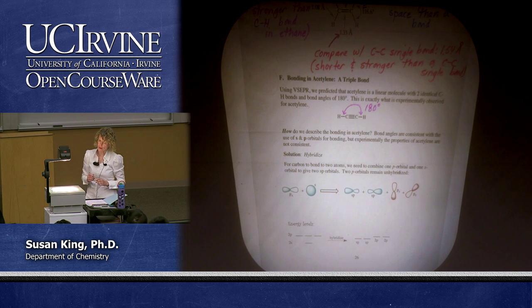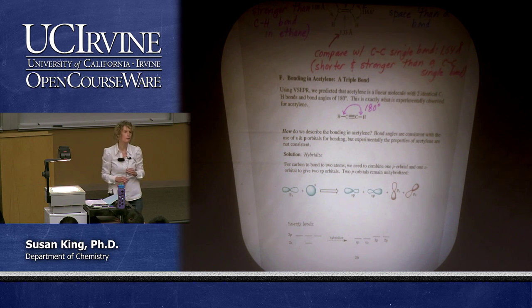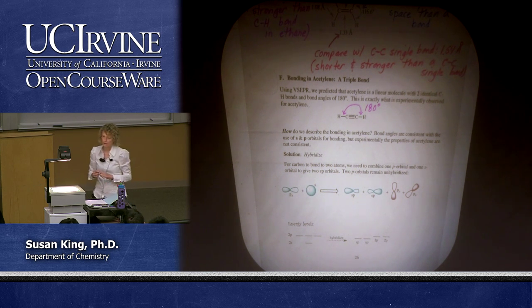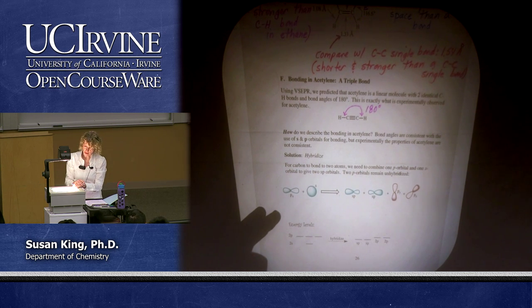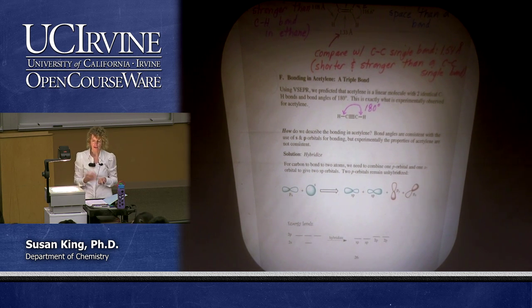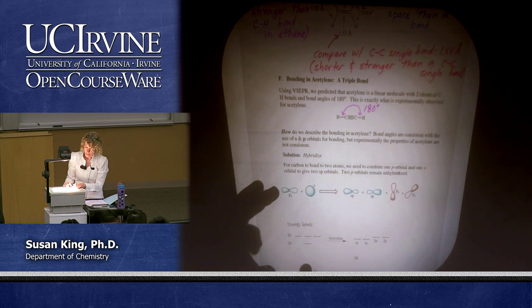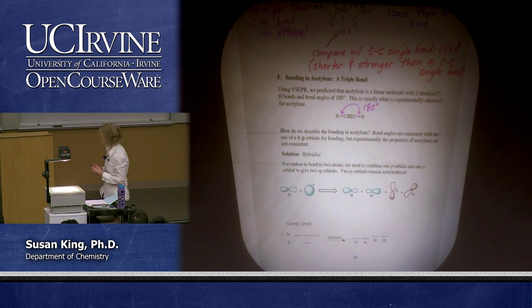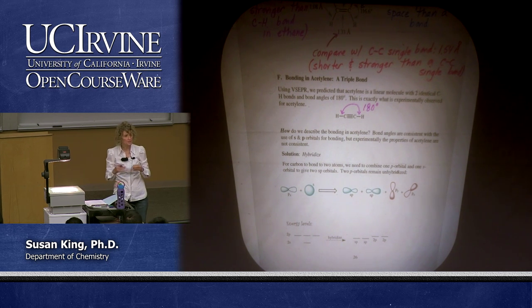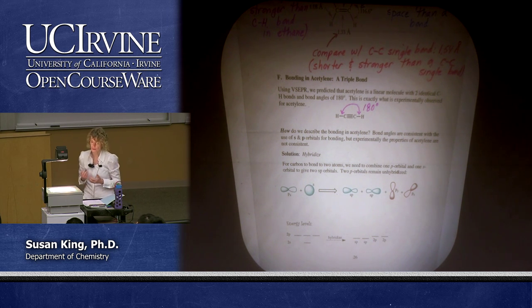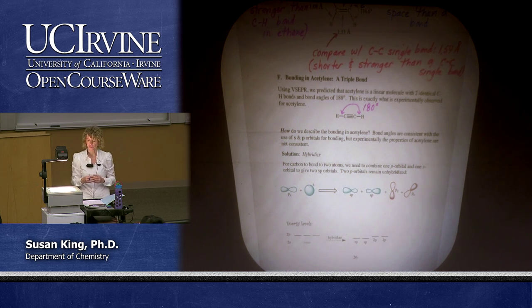From VSEPR we know that a carbon-carbon triple bond has 180 degree bond angles — each carbon has two groups, and those groups want to get as far away from each other as possible. We could use S and P orbitals to describe the bonding in acetylene, but experimentally that won't match what we know about acetylene. So with any carbon-carbon triple bond we are also going to hybridize.